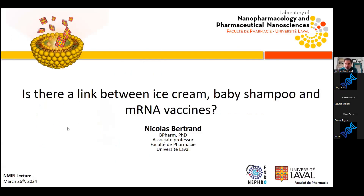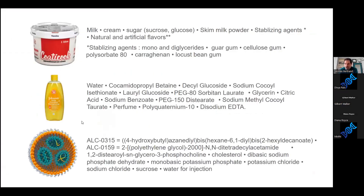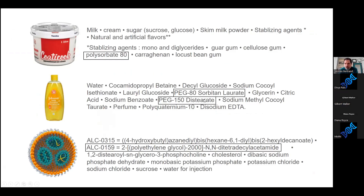For those of you who have read the short description of today's presentation, ice cream, baby shampoo, and mRNA vaccines all contain a polymer called PEG, and it's present in different forms in all of these ingredients. In our lab, we're interested in finding out how PEG can engage the immune system and eventually understand more about the pharmacology of nanomedicines by studying this excipient.